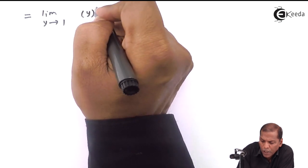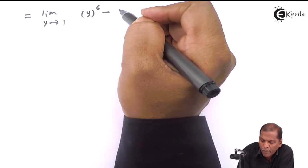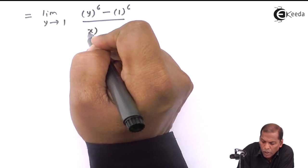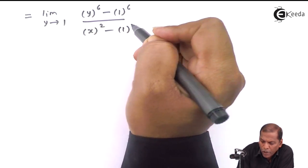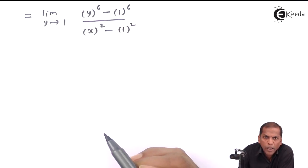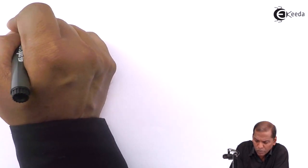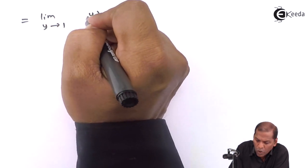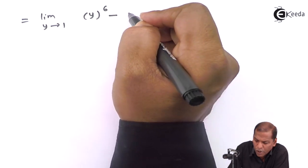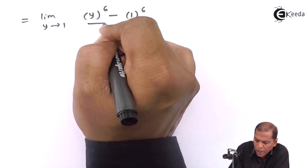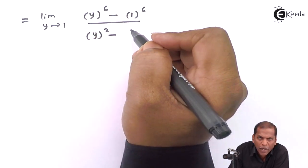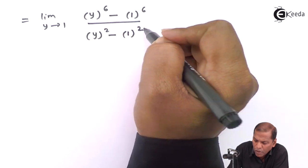y^6 minus, now 1 can be written as 1^6, over y^2 minus 1^2. So the next step is limit as y tends to 1 of y^6 - 1^6 over y^2 - 1^2.